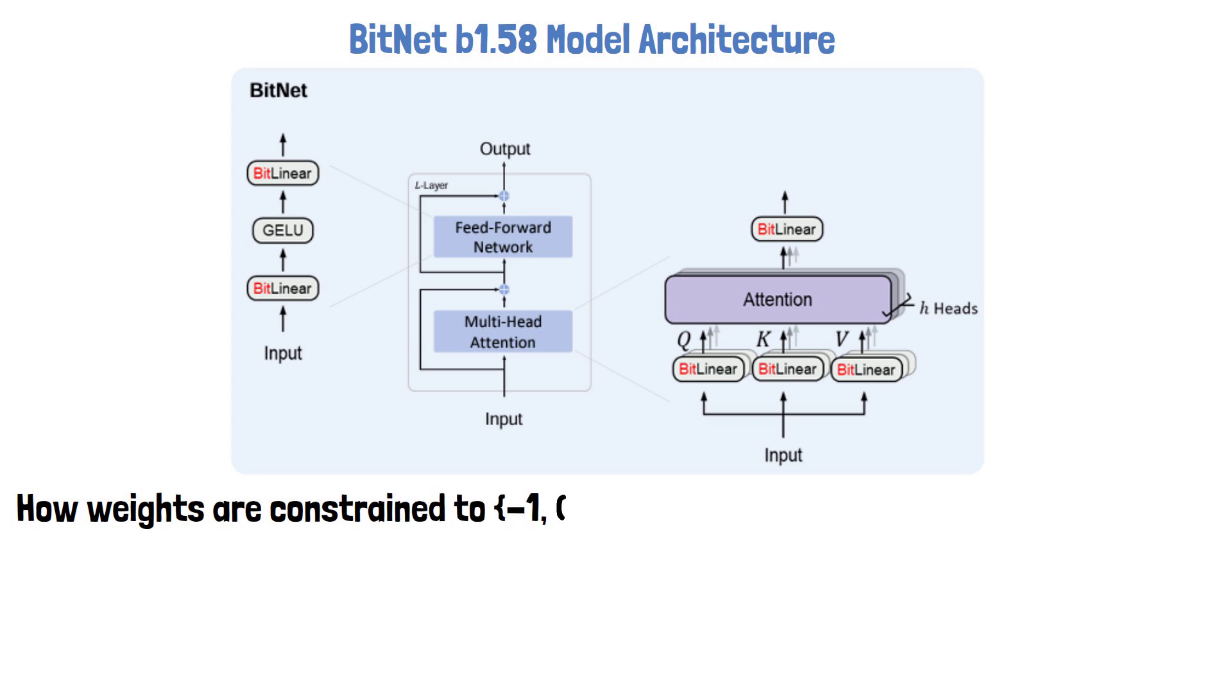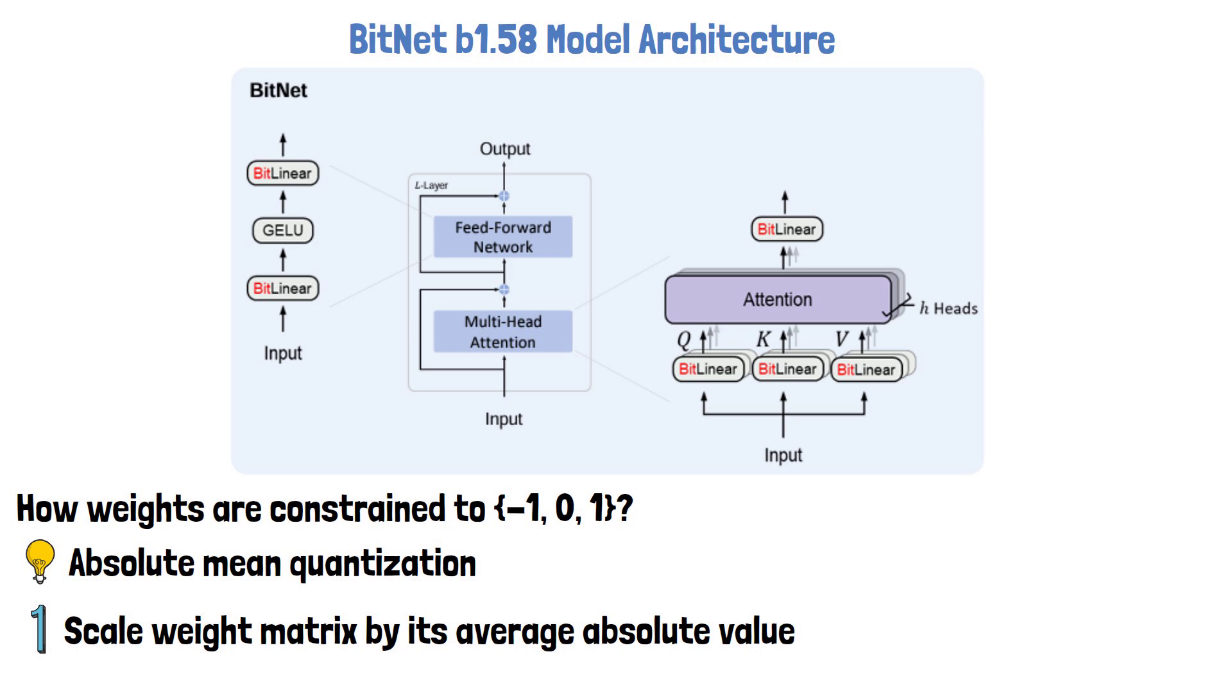How does the model ensure that the weights will only be minus 1, 0, or 1? The answer is using absolute mean quantization. While the model is trained, each time we go through the BitLinear layer, it first scales the weight matrix by its average absolute value. Then it rounds each weight to the nearest number among the 3 possible options.